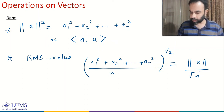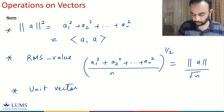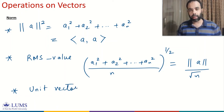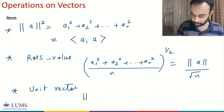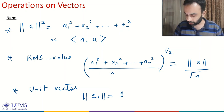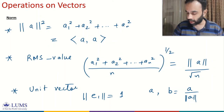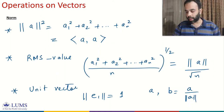Before closing, let's also talk about unit vectors. Every unit vector has a norm equal to 1. Any vector can be made into a unit-norm vector by dividing it by its norm. For example, if we have vector a and define a new vector b = a / ||a||, then b is a unit-norm vector. That covers our discussion on norm — we will continue in the next module. Thank you very much.